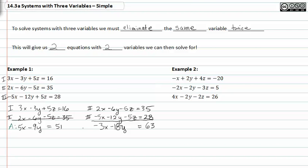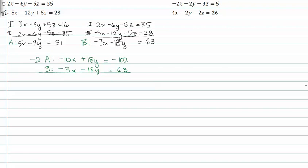Adding equations two and three gives me negative three x minus eighteen y is equal to sixty-three. I'm going to call these new equations a and b. Equation a is going to be multiplied by negative two, so that I can get negative ten x plus eighteen y equals negative one hundred two. Equation b remains the same: negative three x minus eighteen y equals sixty-three. Adding a and b together gives negative thirteen x equals negative thirty-nine. Dividing by negative thirteen on both sides, I get x is equal to three.